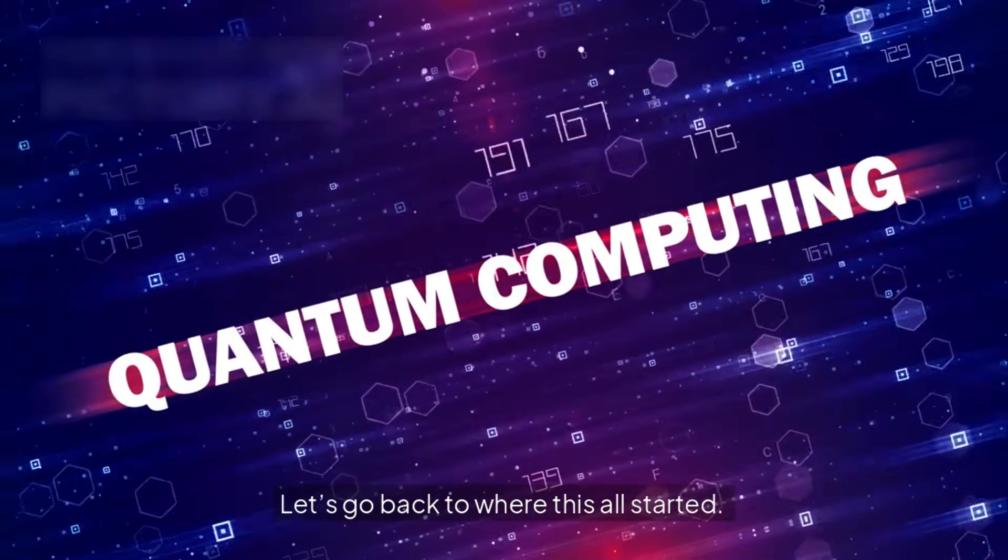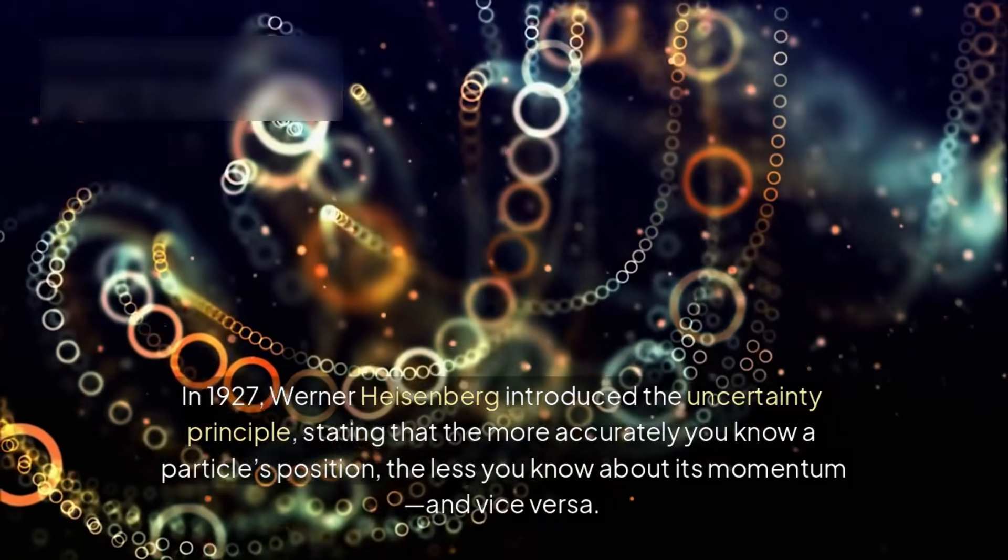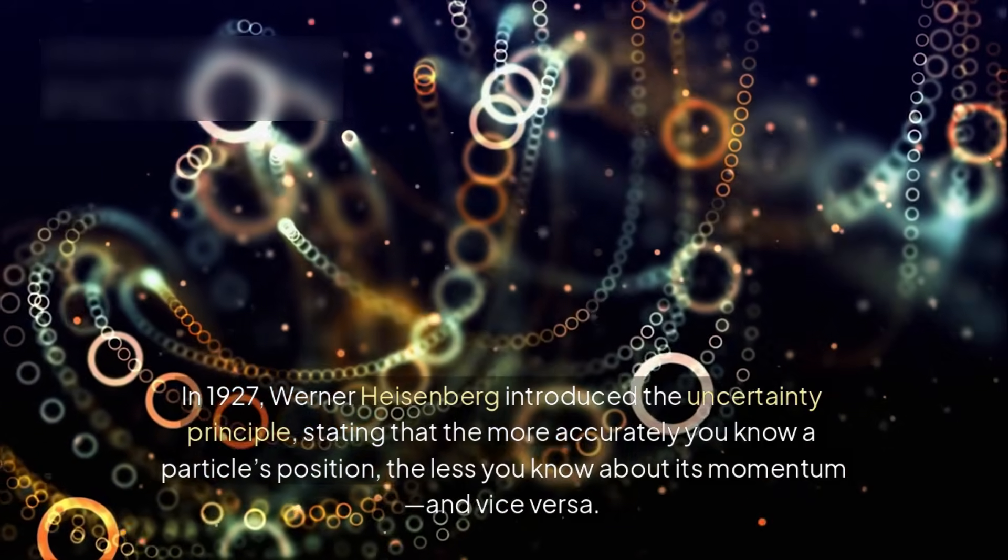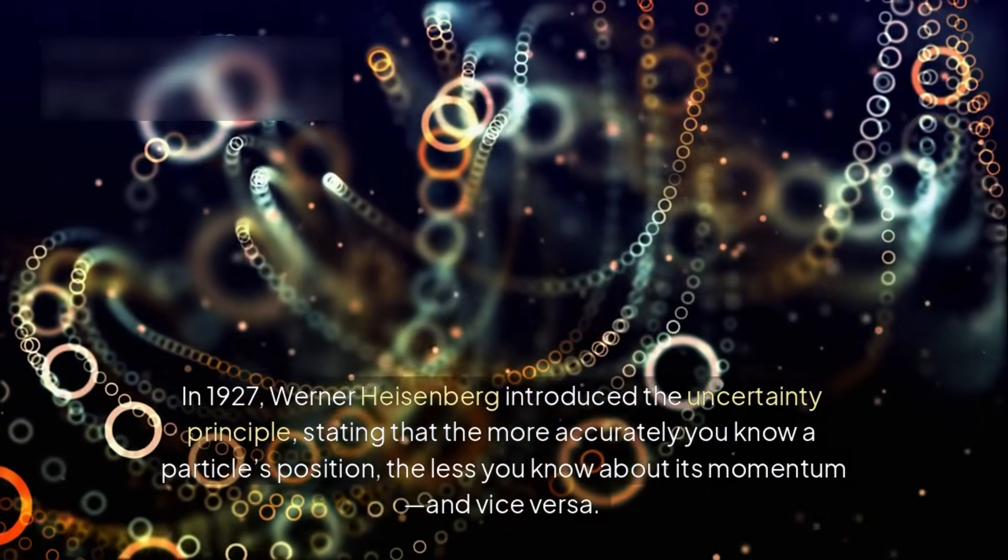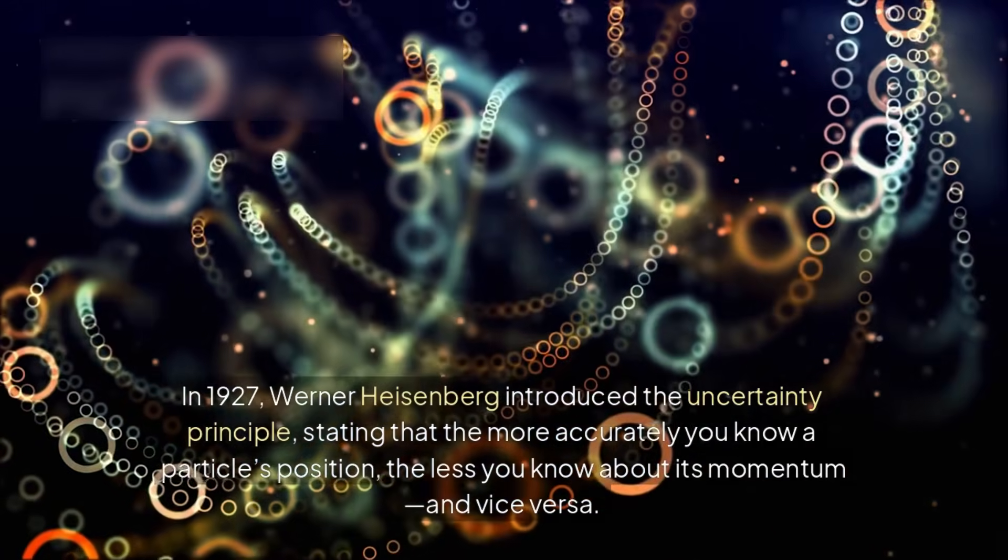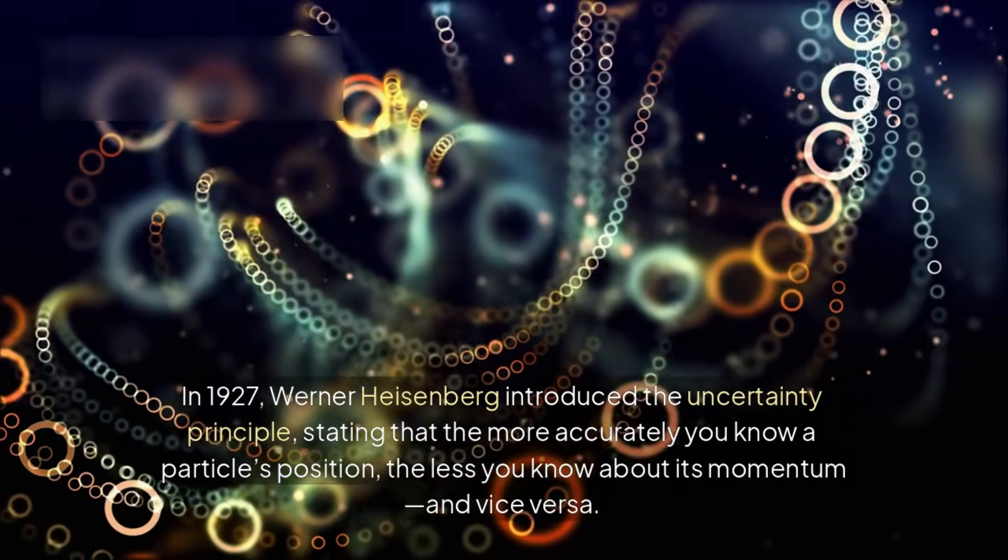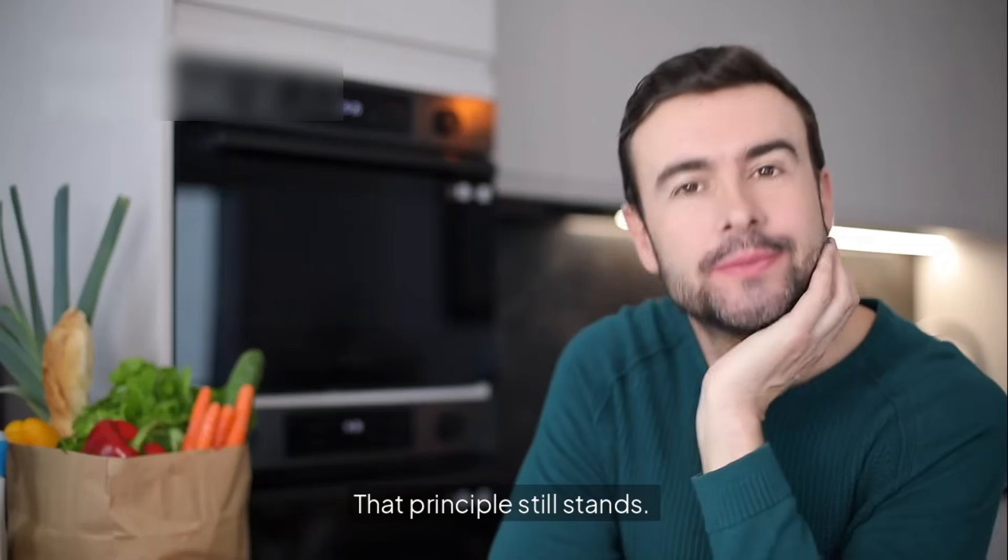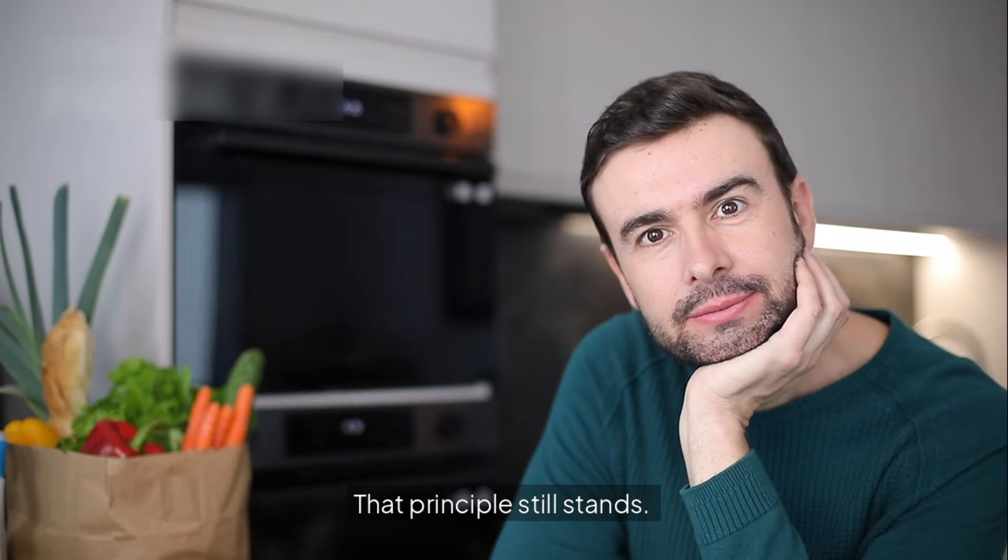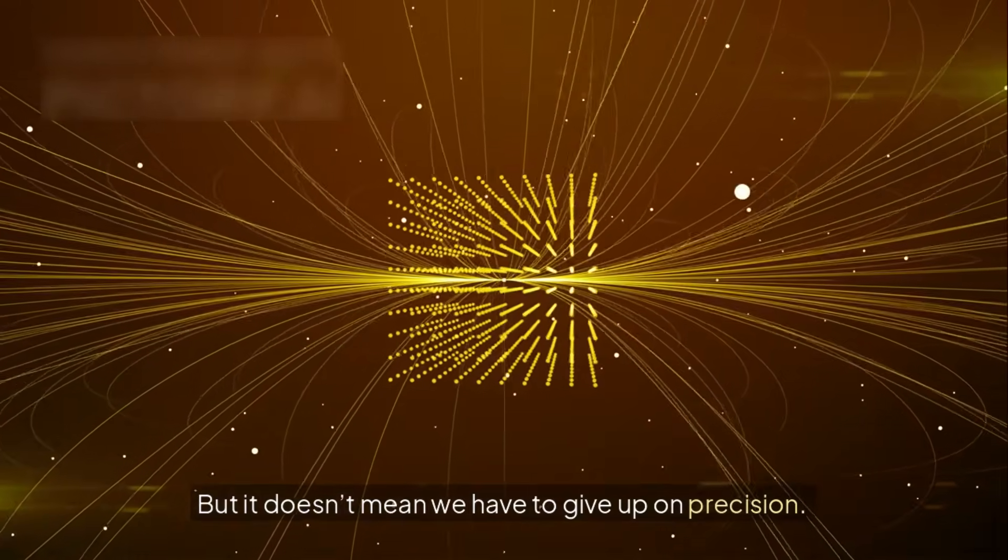Let's go back to where this all started. In 1927, Werner Heisenberg introduced the uncertainty principle, stating that the more accurately you know a particle's position, the less you know about its momentum, and vice versa. That principle still stands. But it doesn't mean we have to give up on precision.